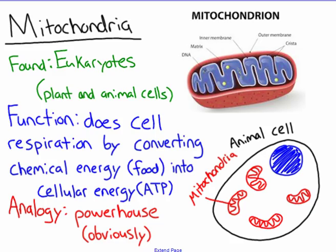Mitochondria — the mighty mitochondria. It's the powerhouse of the cell. It is found in all eukaryotic cells, both plants and animals — a lot of people think mitochondria are just in animal cells, but that is not true. The function is cellular respiration: converting chemical energy, which is our food, into cellular energy, which is ATP. Your amount of mitochondria can actually increase based on how much you work out, so if you're a very fit person, you probably have a lot of mitochondria in your muscle cells.